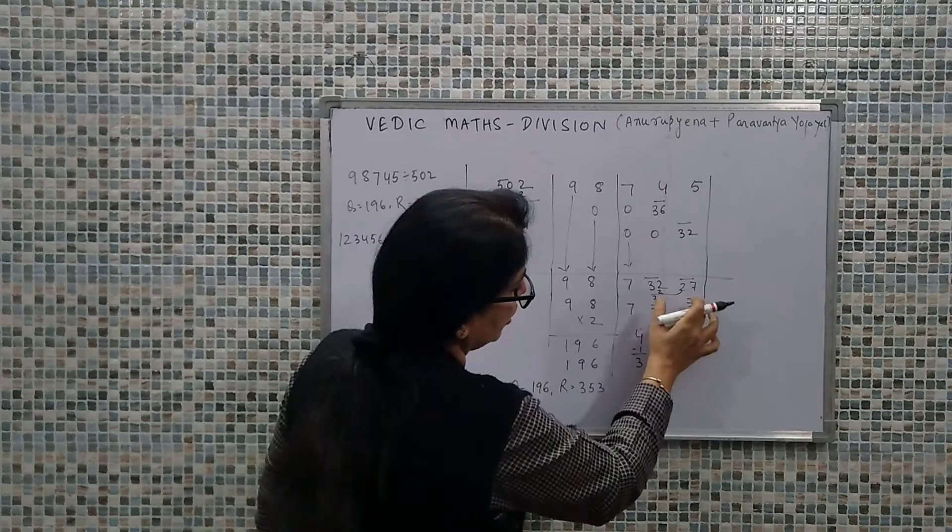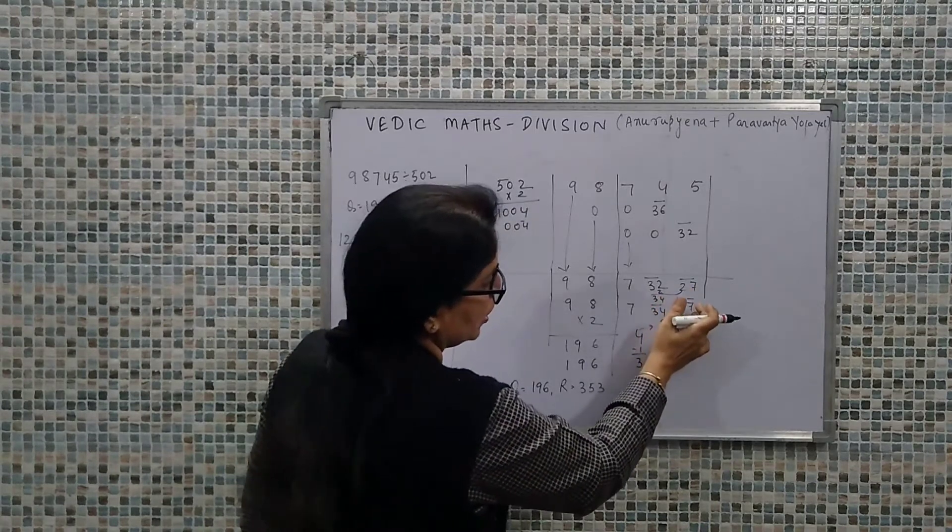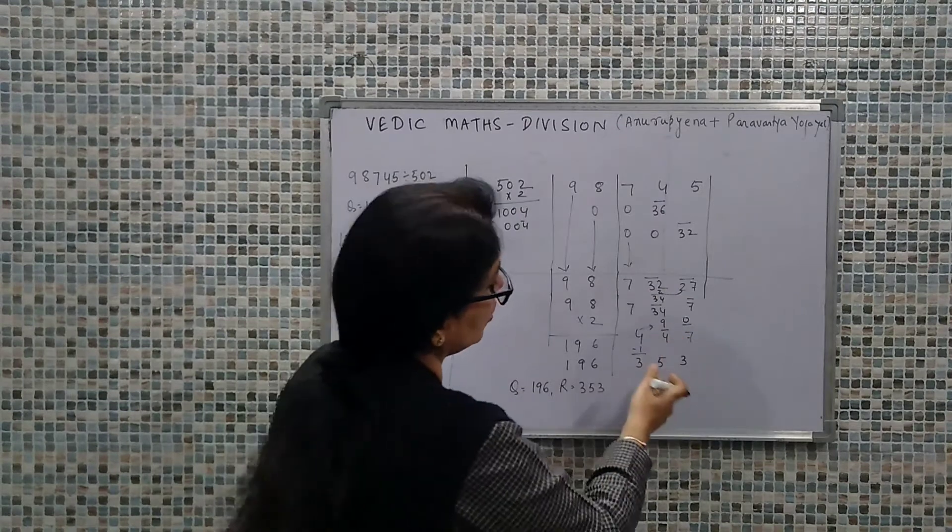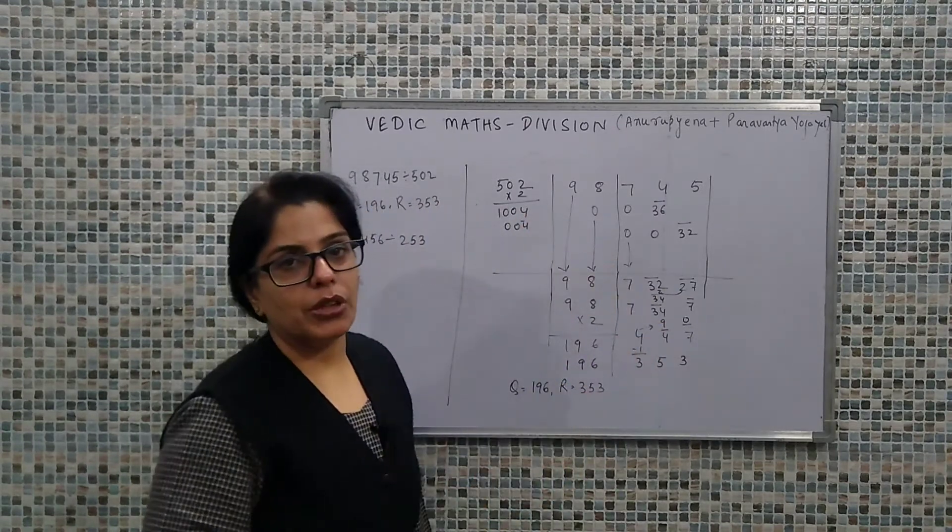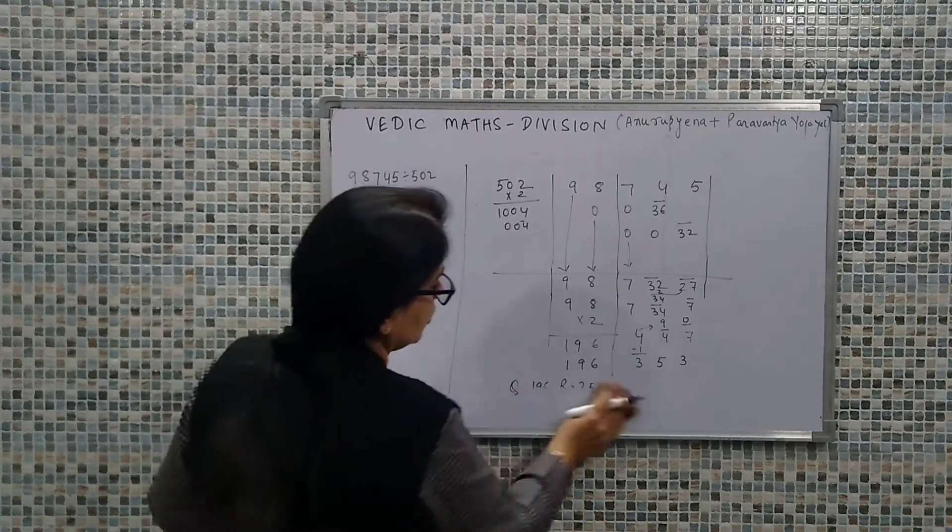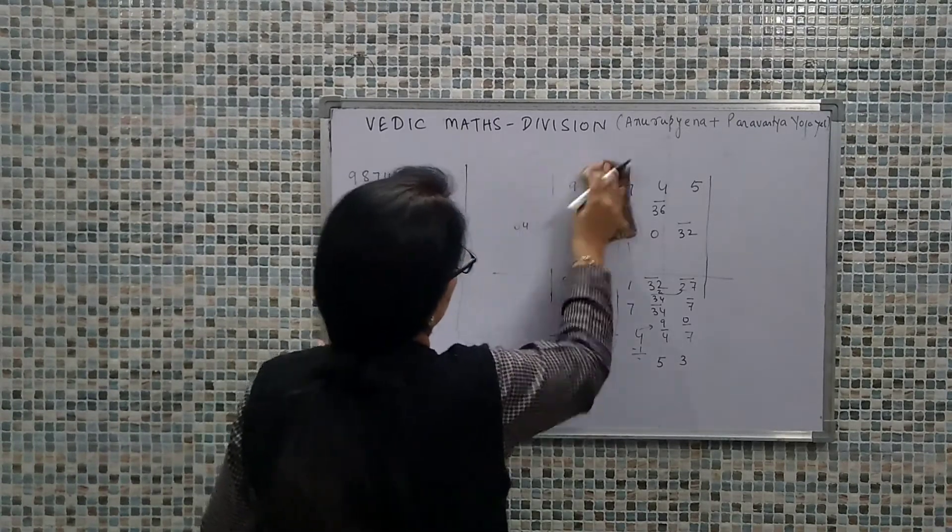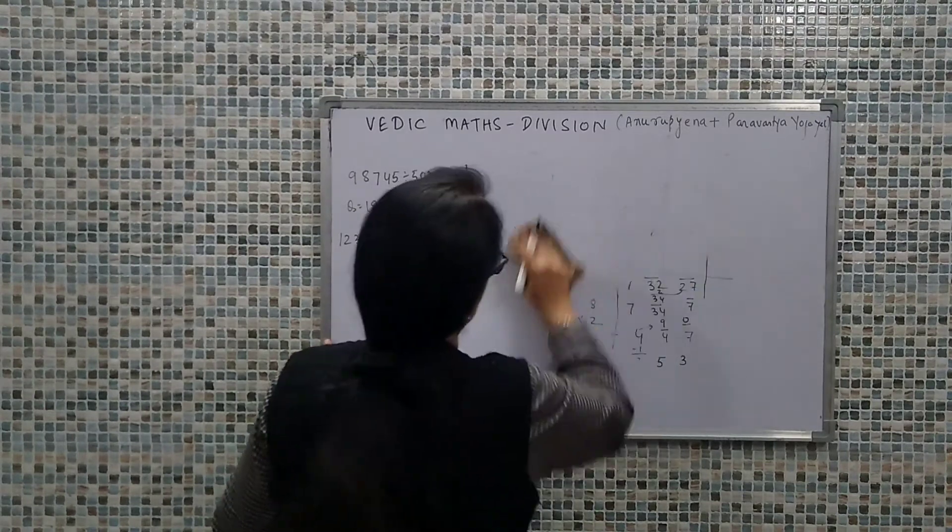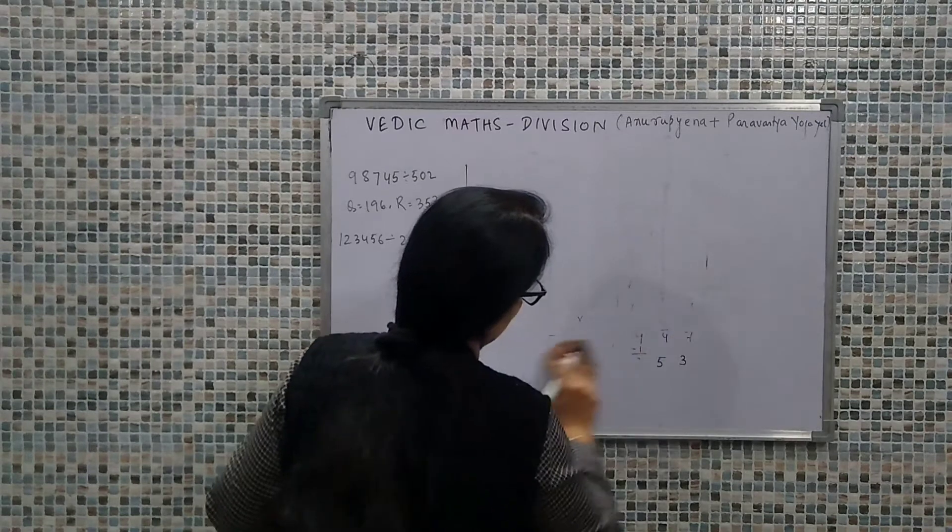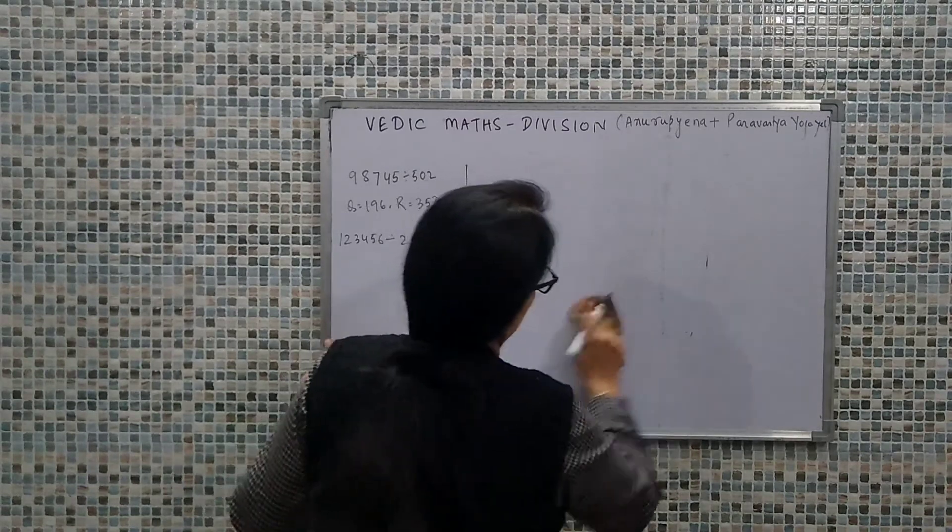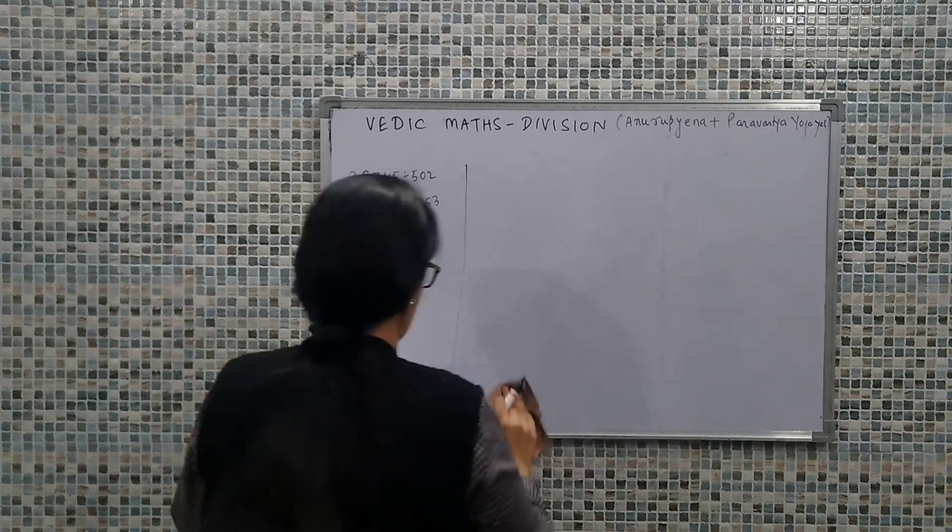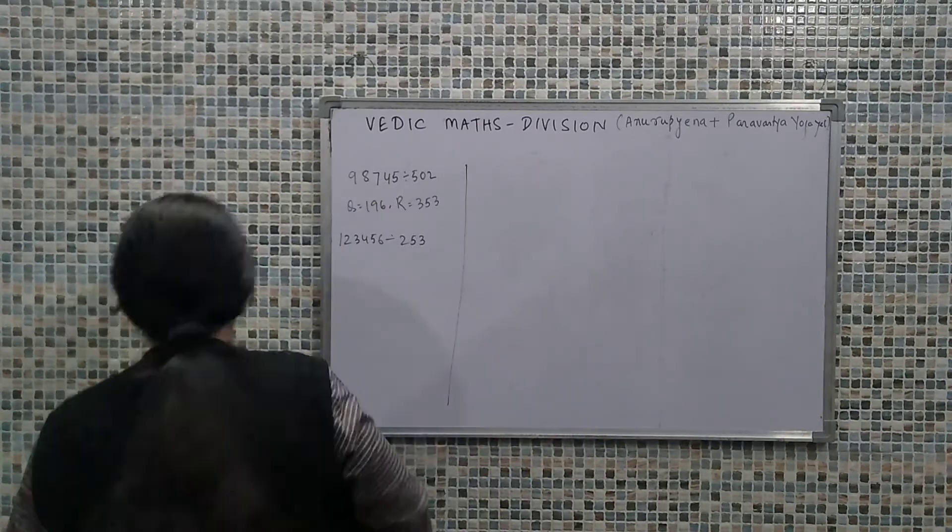There is some complication in our remainder because we are having negative numbers. In case you're getting positive numbers and your remainder is less than the divisor, we can simply compile the answer in that single step way. The multiplying factor we considered for the divisor is the same value we multiply in the quotient.